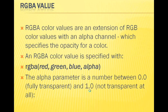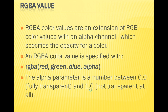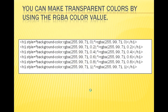RGBA value - RGBA stands for Red, Green, Blue, Alpha. It is an extension of the RGB color value with an alpha channel. The alpha parameter specifies the opacity of a color. The alpha parameter is a number between 0.0 and 1.0 - 0.0 is fully transparent, 1.0 is not transparent at all. With transparent colors, we use RGBA to specify color values.